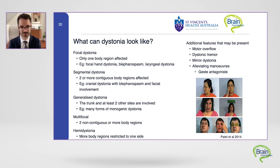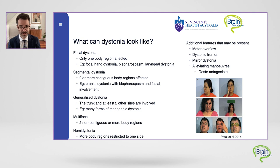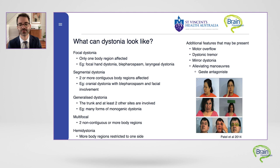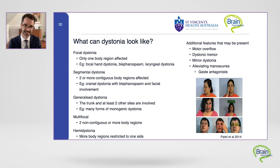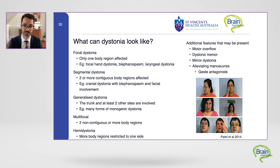Other forms can have quite a significant tremulous component, known as a dystonic tremor. Some forms of dystonia are exquisitely task-specific, only occurring when an individual is performing a certain task — a good example being writer's cramp, which only comes out when an individual tries to write, or musician's dystonia, where the individual may have no evidence of dystonia otherwise but as soon as they attempt to play their musical instrument their dystonia emerges. Dystonic syndromes can be focal, segmental, generalized, multifocal, or even hemi-dystonia involving one half of the body.